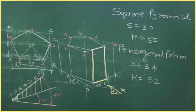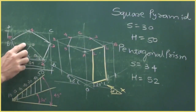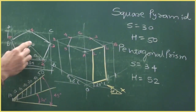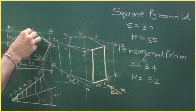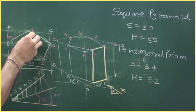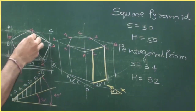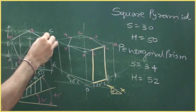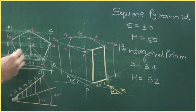Now we need to draw the square. We have the center point — the side is 30 mm, so from the center point we mark 15 mm in all four directions: 15, 15, 15, 15. Drawing through those points gives us a square. We can draw the square over here.